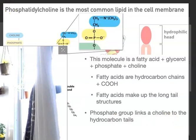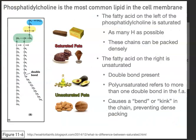Fatty acids are not just hydrocarbon chains — they also have to have that carboxyl group. There are different types of phospholipids, and phosphatidylcholine is the most common type in the cell membrane. Different phospholipids may have different hydrocarbon chain lengths and may differ in the number of double bonds in the hydrocarbon chain, which in part determines the identity of the phospholipid.